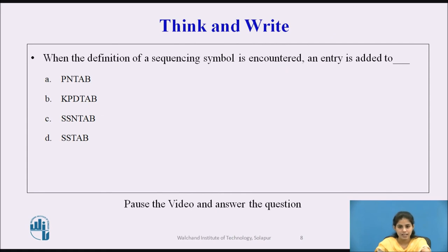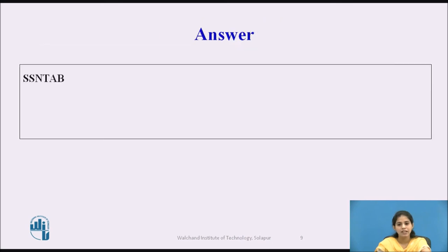After seeing this concept, here is a question: when the definition of a sequencing symbol is encountered, an entry is added to which table? The options are: (a) PN tab, (b) keyword parameter default table, (c) SSN tab (sequencing symbol name table), (d) sequencing symbol table. The answer is: we enter it into the sequencing symbol name table (SSN tab).